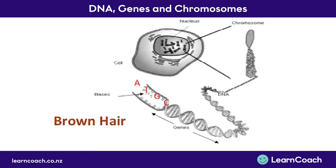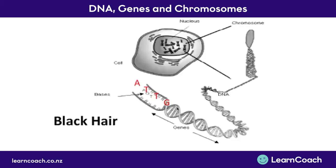But if we change that code a little bit to say A, T, T, G, that might now give you black hair. See, this is still a gene - it's still a section on your DNA that codes for your hair colour. But because we change the individual code, we change what physical characteristic you had.